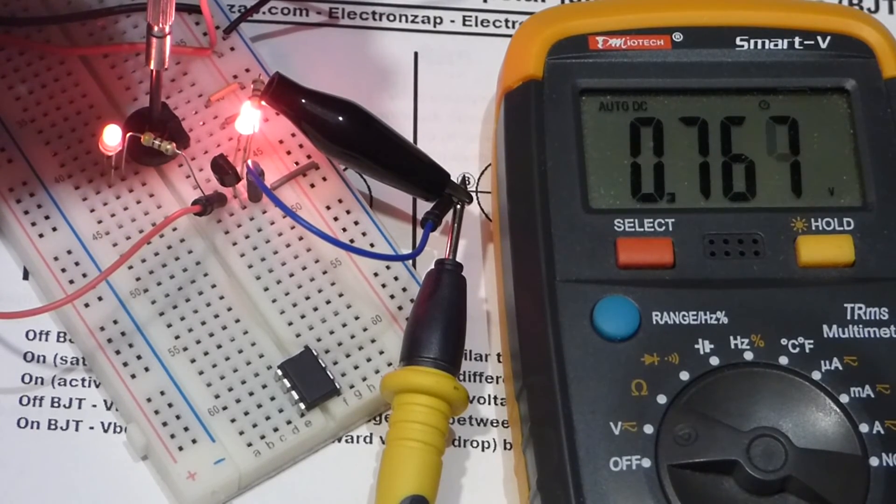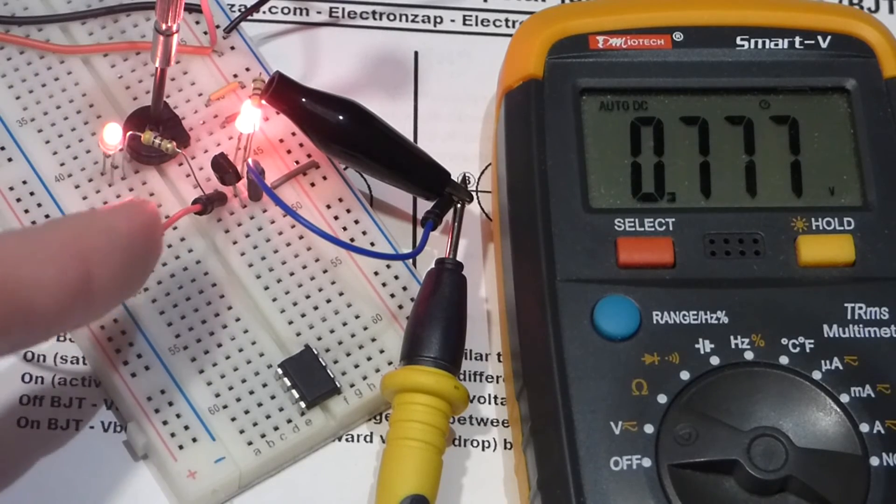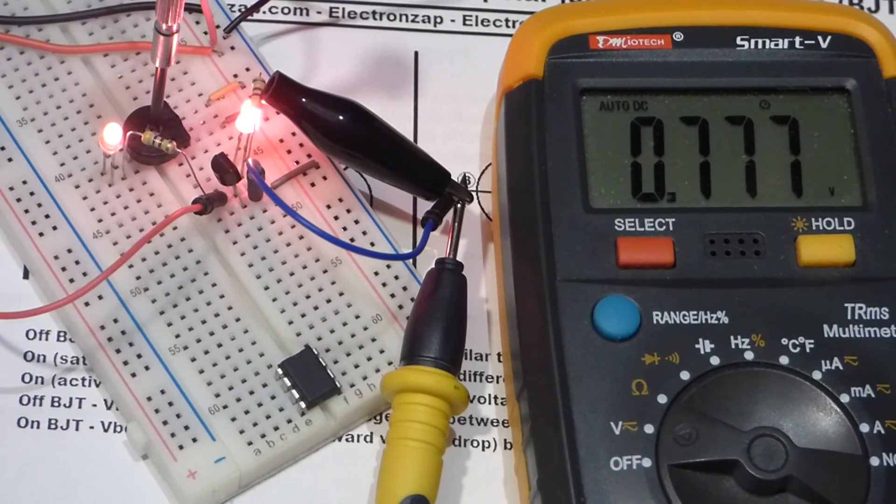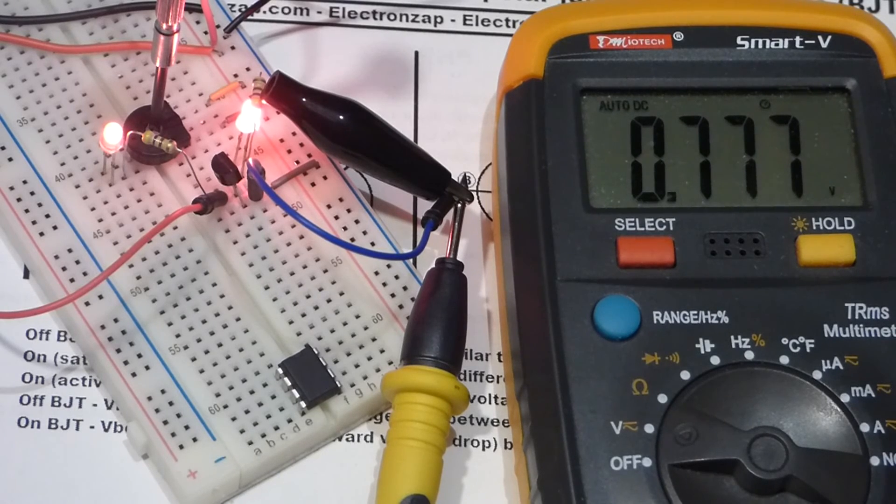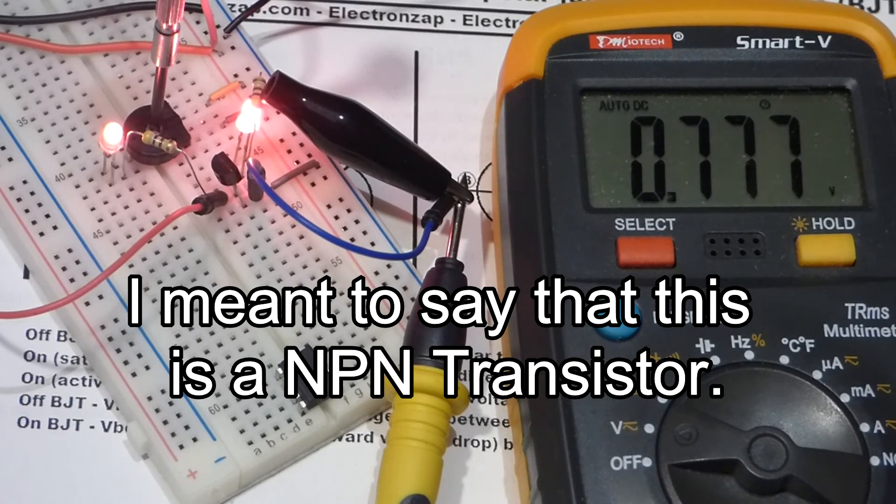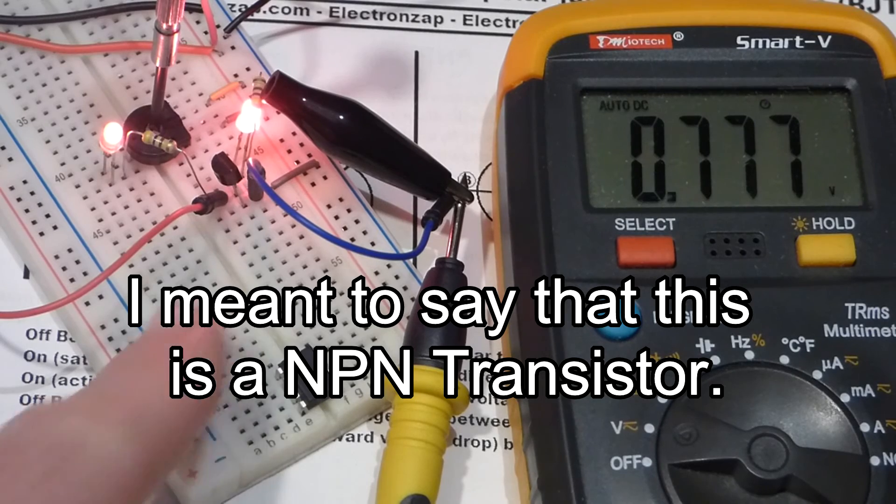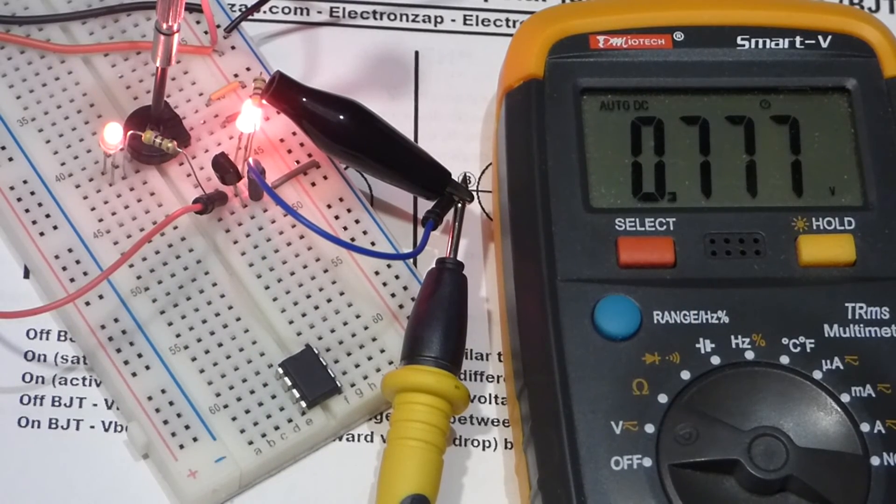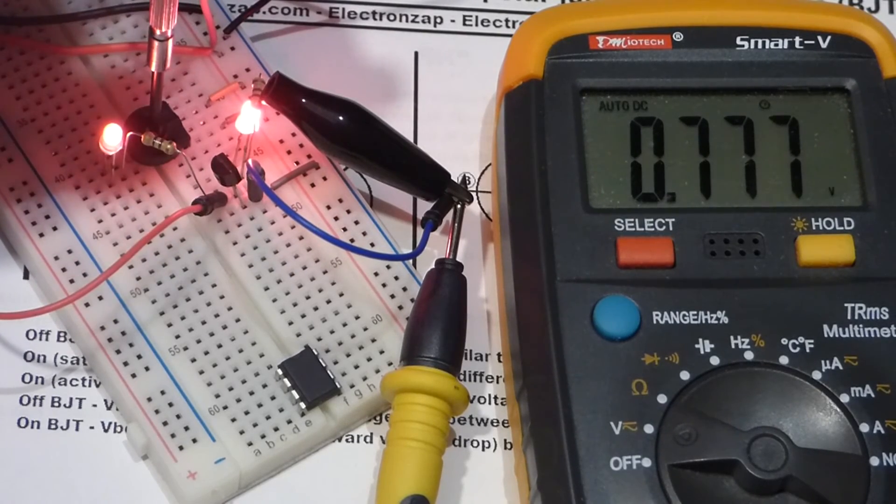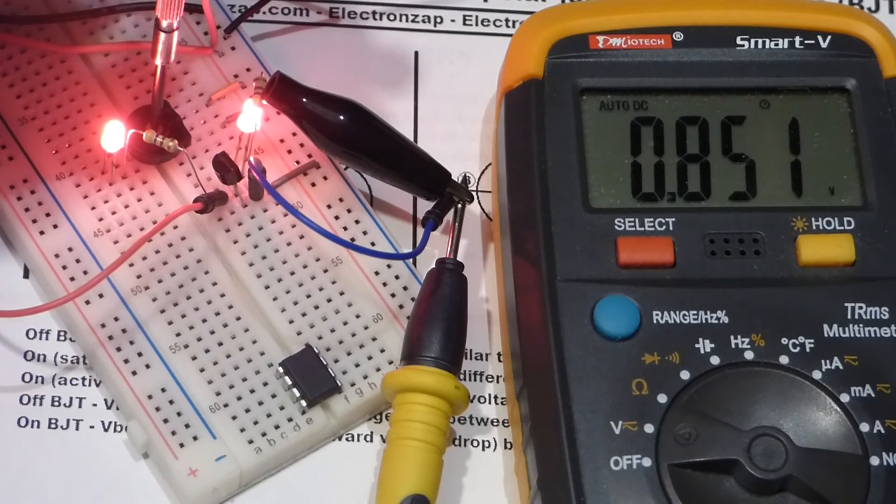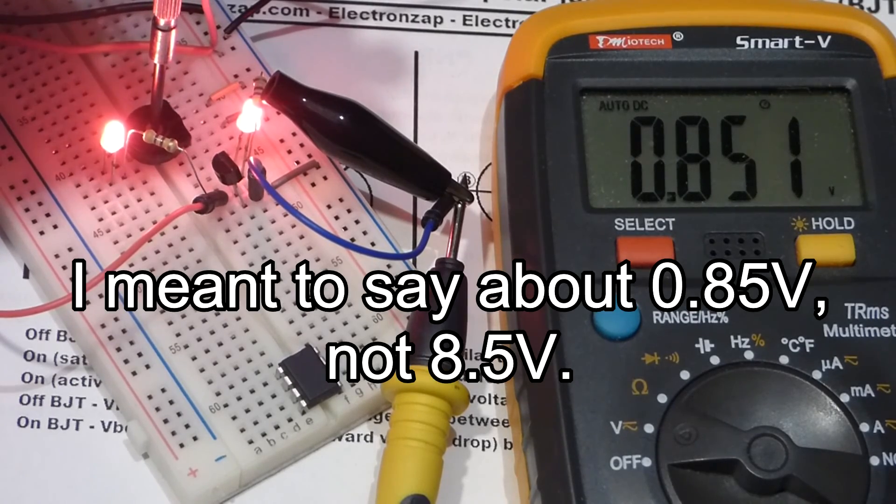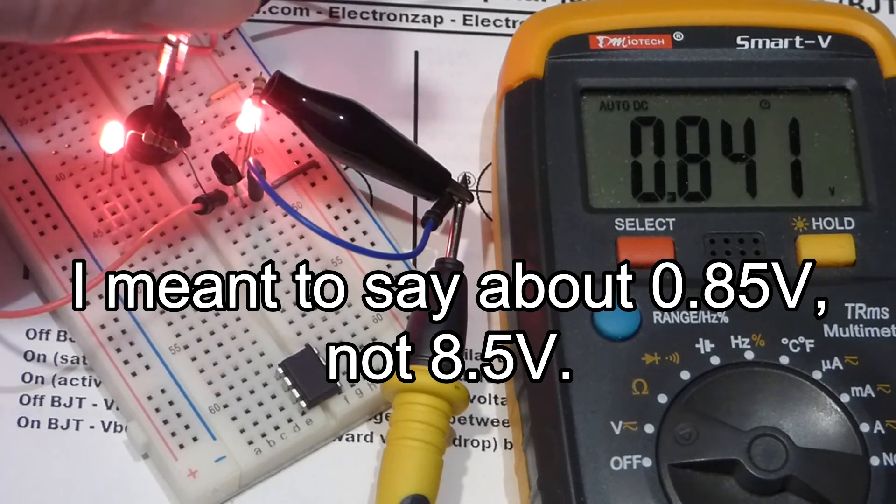So it looks like the higher the voltage, the more of a voltage drop from the base to the emitter. Because remember, this is a NPN type transistor, so the base is P type, the emitter is N type. So that's practically a diode. So there's a voltage drop, just like with the diode.